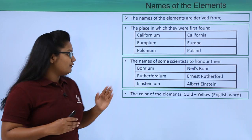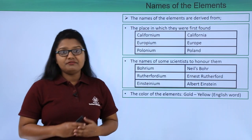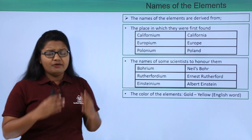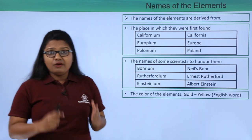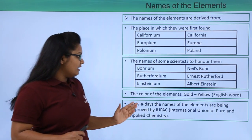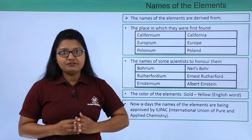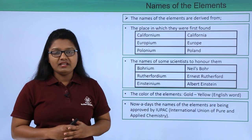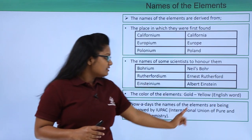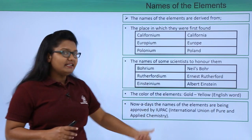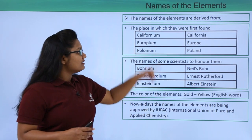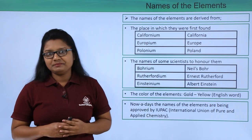Another set of elements are named after their color. For example, gold is named after an English word meaning yellow. Nowadays, the names of the elements are approved by IUPAC, which stands for International Union of Pure and Applied Chemistry. This is how we name elements.